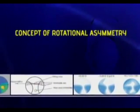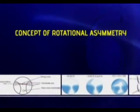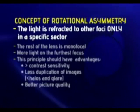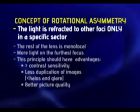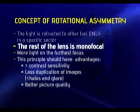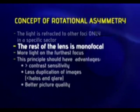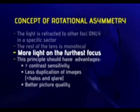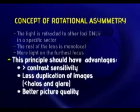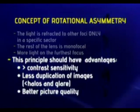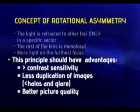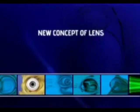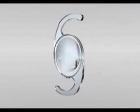We are going to explain the concept of rotational asymmetry. In rotational asymmetrical lenses, the light is refracted to the near focus only on a specific sector. The rest of the lens behaves like a monofocal lens. The main advantage of these new principles is that more light should go to the furthest focus, with the following consequences: increased contrast sensitivity function, less duplication of images inducing less halos and glare, and better image quality. This is the new concept, comprised in a new lens.